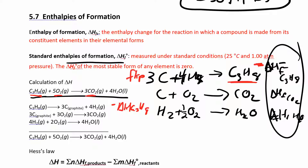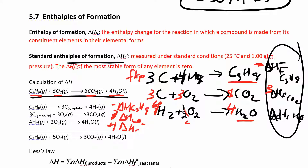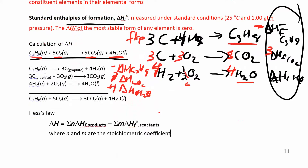Looking at the product side, I have three CO2, so I multiply the CO2 formation reaction by three, giving me three times the delta H of CO2. Then I have water as a product, so I multiply the water formation reaction by four. Four times a half gives me two, and I get four times the delta H of water. Adding everything up gives me this overall reaction.